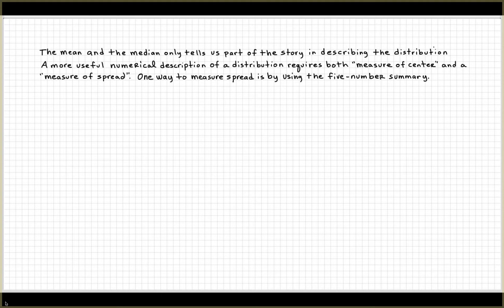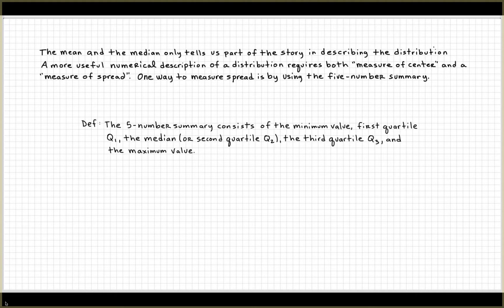One way to describe spread is by using the five-number summary. By definition, the five-number summary consists of a minimum value, first quartile Q1, the median or the second quartile, the third quartile Q3, and the maximum value.